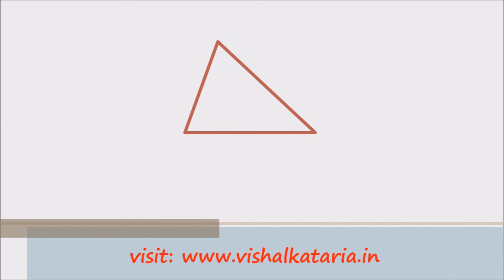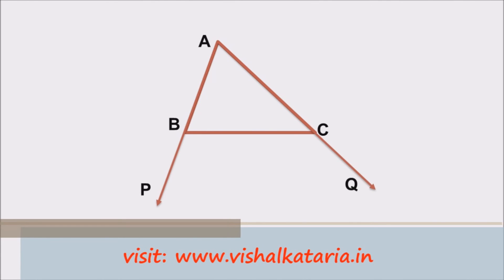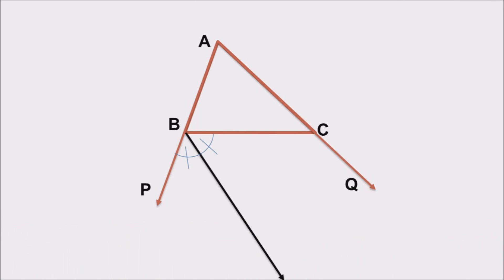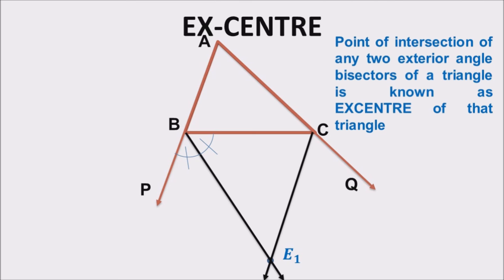Again plot a triangle and label it as ABC. This time extend sides AB and AC to points P and Q respectively. Now draw the exterior angle bisector to angle B, and similarly to angle C. These two exterior angle bisectors intersect at a point, and this point is defined as the excenter of a triangle, symbolized as E1. There are three excenters: E1 opposite to A, E2 opposite to B, and E3 opposite to C. The point of intersection of any two exterior angle bisectors is known as the excenter of a triangle.